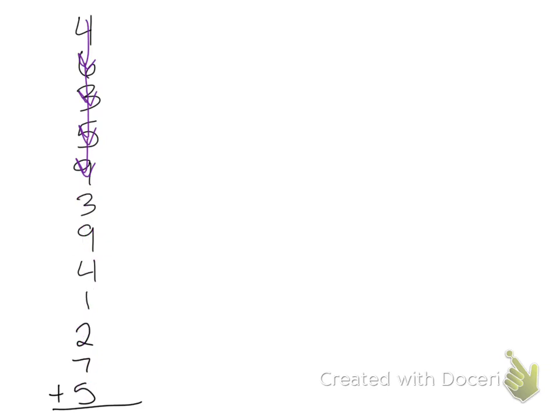But that's not always the easiest way to add long strings of numbers. Another way we can do this is looking for numbers that add up to have a sum of ten. And this was called making tens. And this is probably the easiest way to do it.